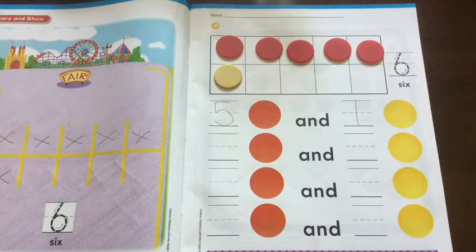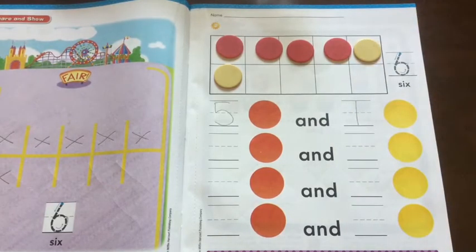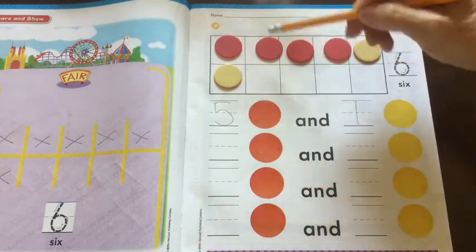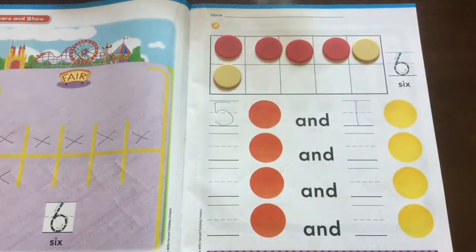So now I'm going to switch it around. See if we can figure it out. I'm going to turn one of my counters over to make it yellow. Oh, here's my question. How many do I have all together? Let's count them. 1, 2, 3, 4, 5, 6. That's right. It stayed 6. I still have 6 counters. But some are red. Some are yellow.